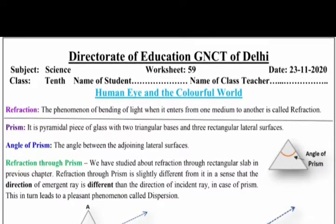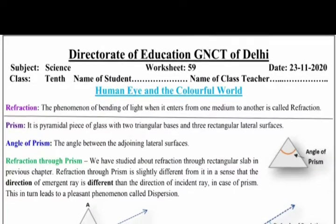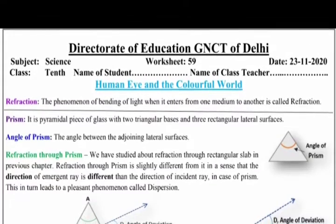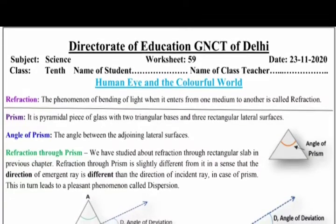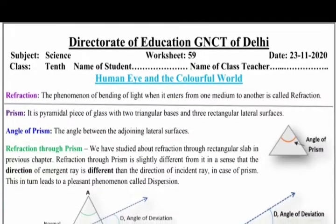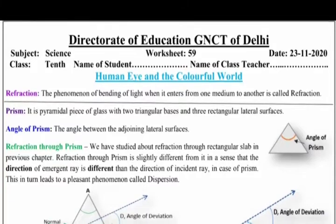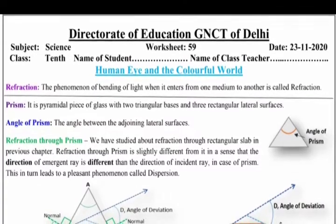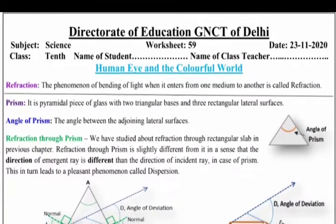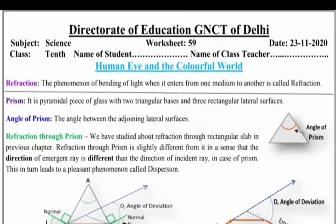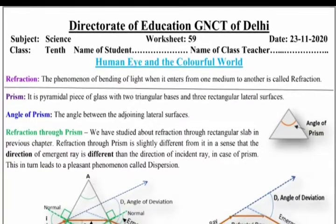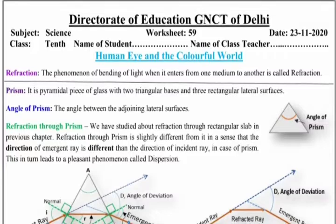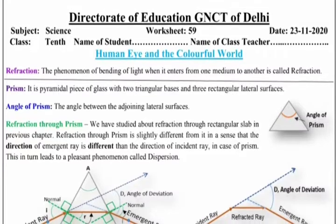A prism is a pyramidal piece of glass with two triangular bases and three rectangular lateral surfaces. The angle of prism is the angle between the two adjoining lateral surfaces, as you can see here.